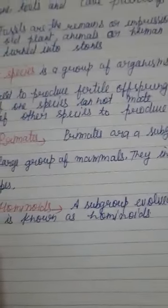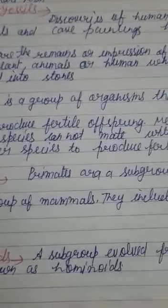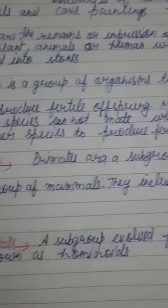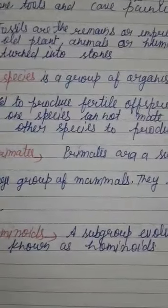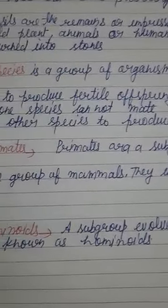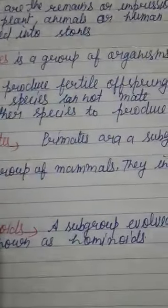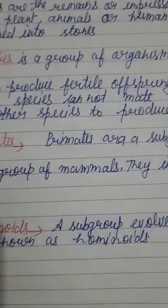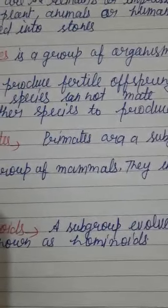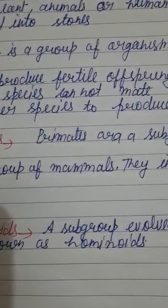Let's start with human fossils. Fossils kya hote hain? Fossils are the remains or impression of a very old plant, animal, or human which have turned into stones. Yani, bahut puraane samay ki — ye kya hain — jeevaash, jo bahut atiyant puraane podhe, janwar, maanav — unke jo avshesh hain, jo ek pathar ke roop mein badal jaate hain.